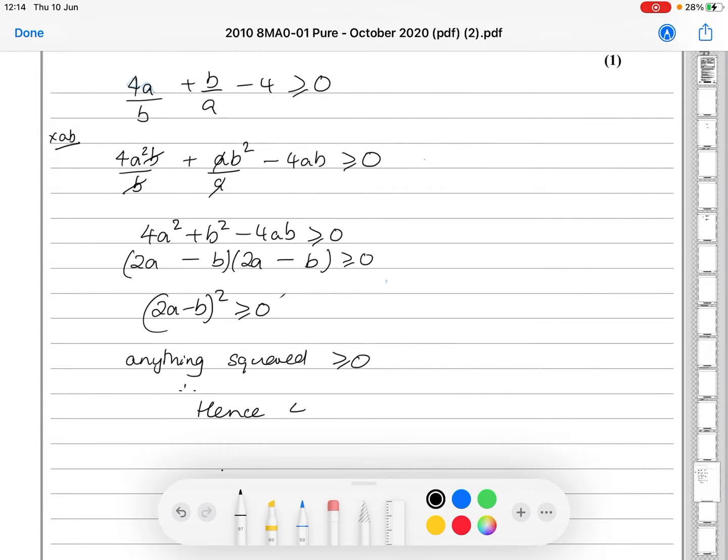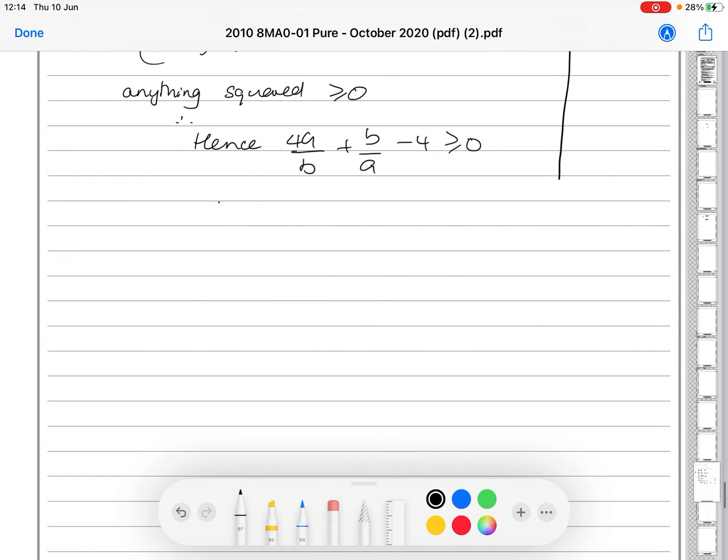hence, 4a over b plus b over a minus 4 is greater than or equal to 0. Which means 4a over b plus b over a is greater or equal to 4.